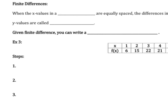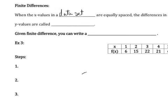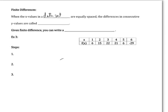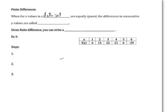Okay, so when the x values in a data set are equally spaced. Now, let's stop there with our definition and let's look at this data set. The data set goes from 1 to 6, 1, 2, 3, 4, 5, 6. These are equally spaced.